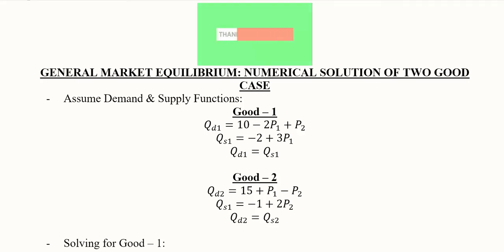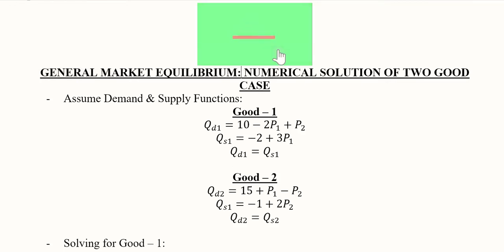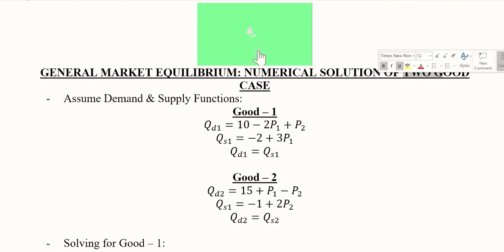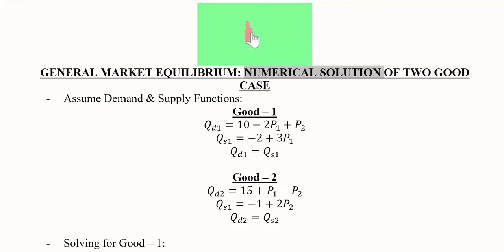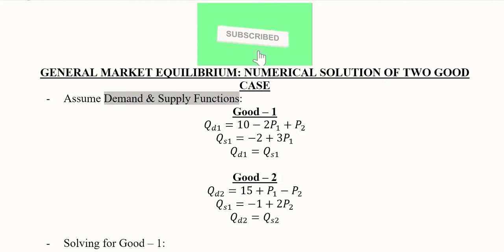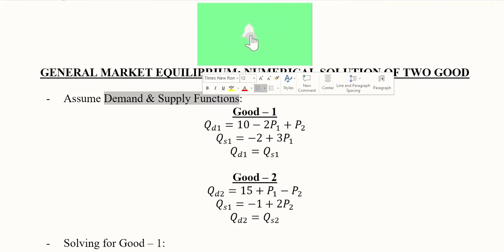In this video we will extend our analysis from partial to general market equilibrium and we will consider two goods instead of one good. This will be a numerical example — we can also do it symbolically, but here we are considering a demand-supply function set.